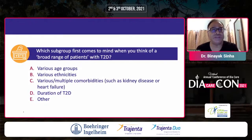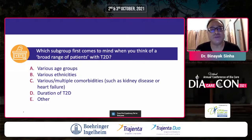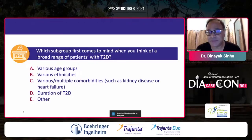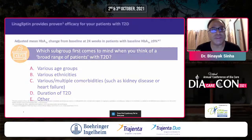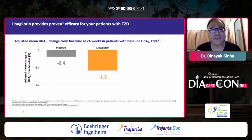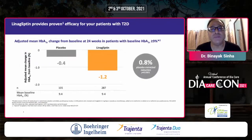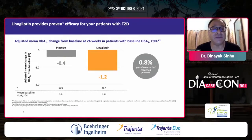Which subgroup first comes to mind when thinking of a broad range of patients — age group, ethnicities, comorbidities, duration of diabetes and others? Let us look at each of them separately in conjunction with the data. Linagliptin shows a 1.2% reduction of HbA1c, which is 0.8% placebo-corrected and statistically highly significant, with a mean baseline HbA1c of 9.5.